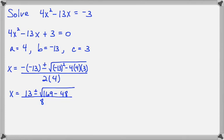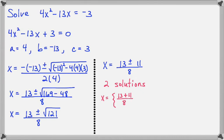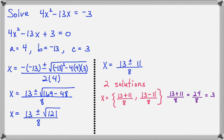Now simplify under the radical: 169 minus 48 is 121, and the square root of 121 happens to be a whole number — 11. So we end up with 13 plus 11 over 8, and 13 minus 11 over 8. We have two solutions here. 13 plus 11 is 24, and 24 over 8 is 3. For the other one, 13 minus 11 is 2, and 2 over 8 is one-fourth. So our two answers simplify down to 3 and one-fourth.